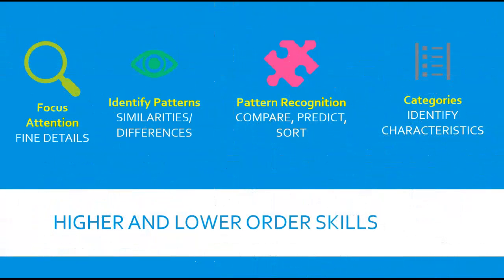The textbook describes sub-skills of critical thinking, including focusing attention to recognize the significance of fine details; using that attention to identify patterns, such as similarities and differences, absence and presence, and order and sequence; using the recognition of pattern in order to compare and contrast items and predict possible outcomes; sorting and labeling items into groups so they form categories; and using an idea of categories to identify the characteristics of new phenomena and make judgments about them.